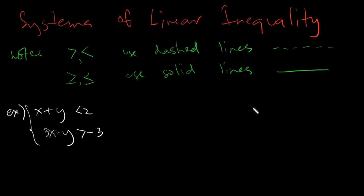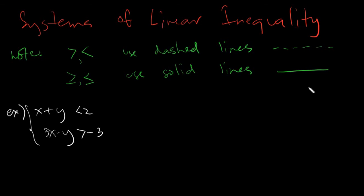Meaning, all the points that will lie on the line and also on the shaded part — same goes for dashed lines — the points on the lines will be part of the solution. So let's have our first example so that we may have a better picture of what we will be going over.